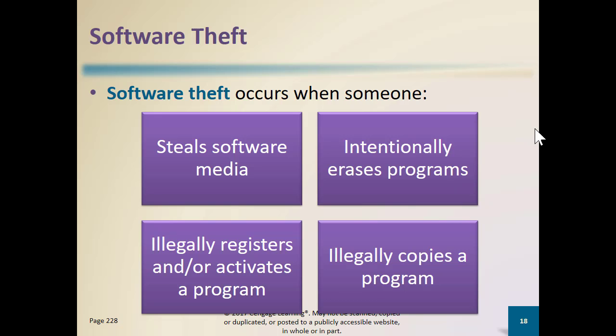Hello students, this is part two of chapter five on security and ethics and all the great things we need to be concerned with when it comes to protecting and understanding how we might violate laws as it pertains to software. We're going to cover the theft of software, theft of information, theft of hardware, vandalism, and talk about failures — what happens when my hard drive fails — which will lead us into backing up and also wireless security.